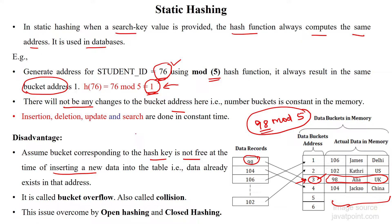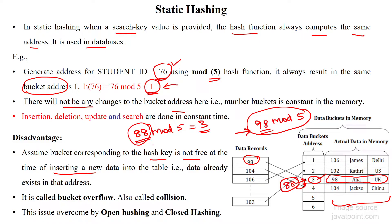Suppose I want to insert the 88th student. Calculating the key for the 88th student in this hash table also gives the value 3. So the 88th student's value also needs to be stored in bucket address 3, but the 98th student's value is already stored there.